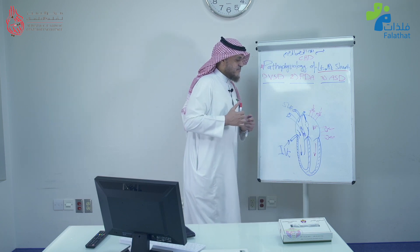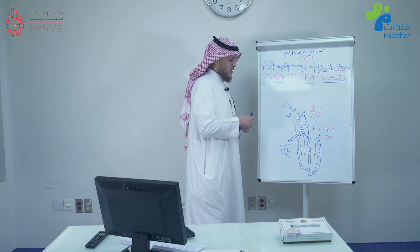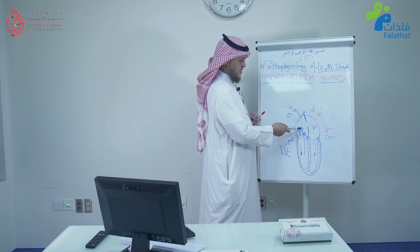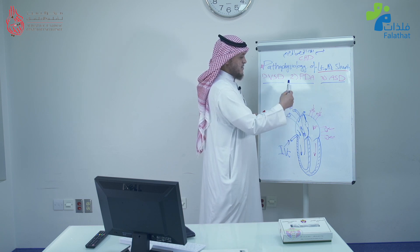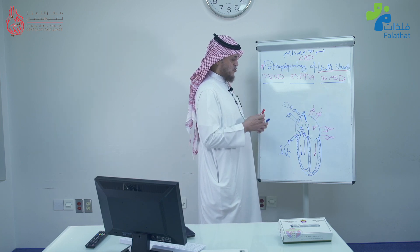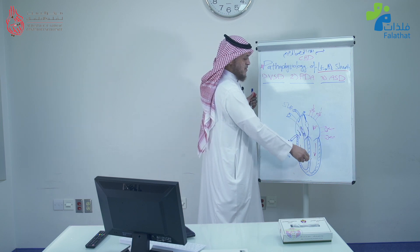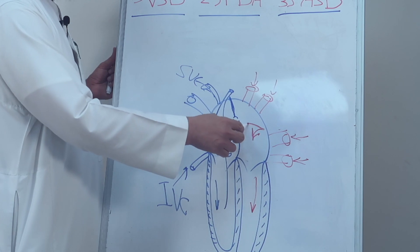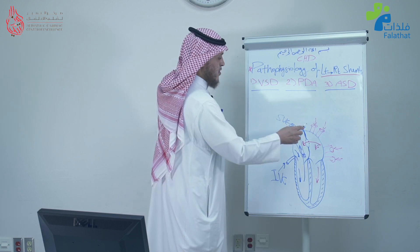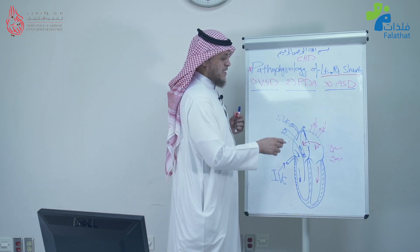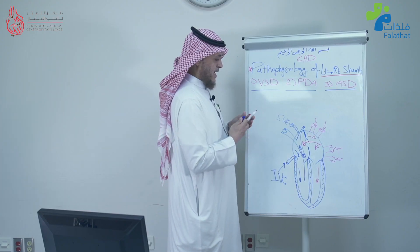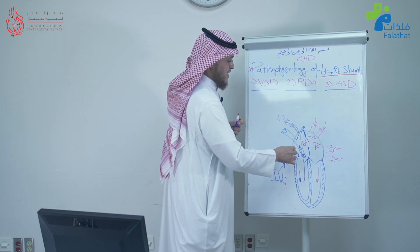So let's follow the blood now. The RV has received its cardiac output, it has ejected it into the pulmonary arteries, it got oxygenated, and now it came back through the pulmonary veins to the left atrium. The blood now has two choices: through the mitral to the LV, but now we have a hole here. So there is also a chance that the blood can go from the left atrium to the right atrium through the atrial septal defect.